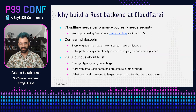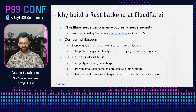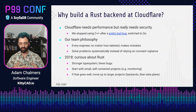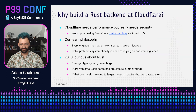Then in 2017, they had a pretty bad bug called CloudBleed, where a buffer overflow meant they leaked secret data from their customers to visitors of websites. It was pretty bad. So CloudFlare decided to rewrite everything in memory-safe languages. At the time, that mostly meant Go.